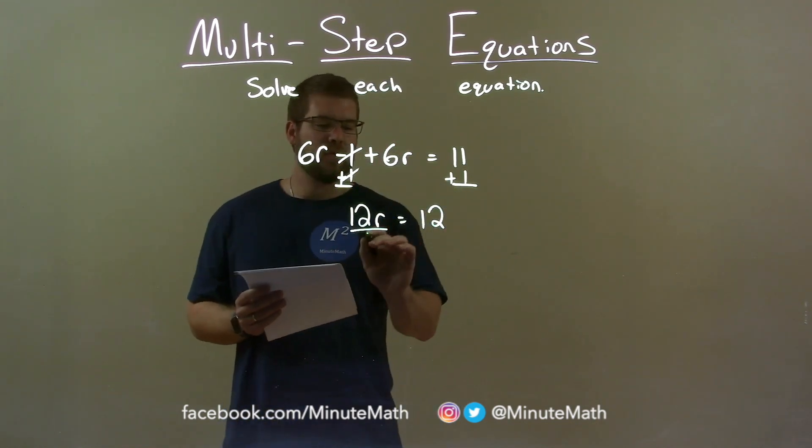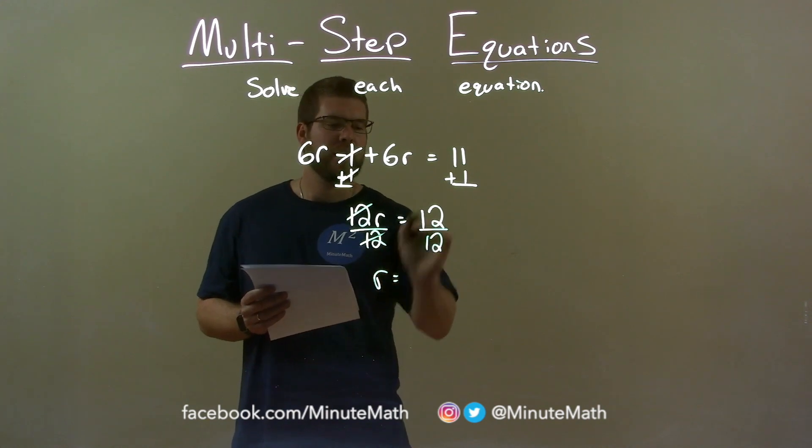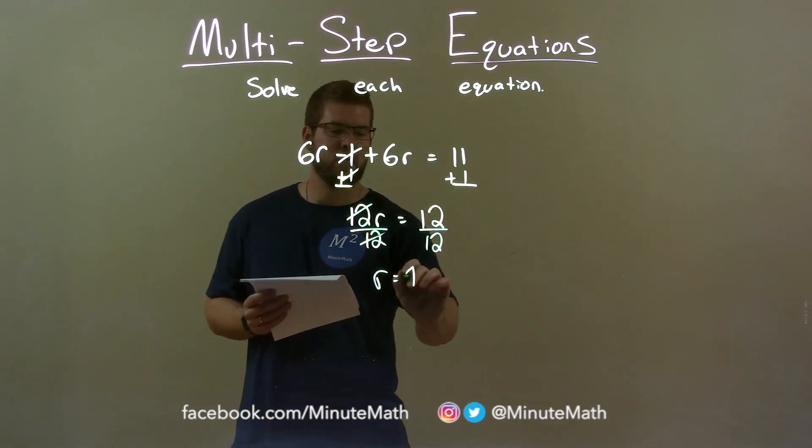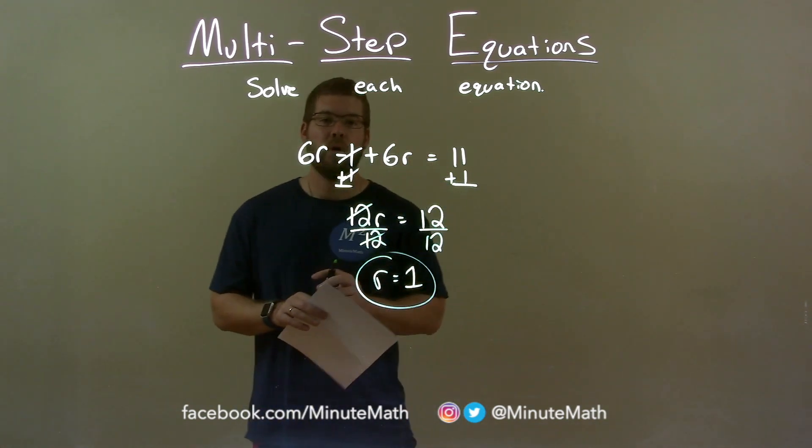Now, I divide both sides by 12, giving me r by itself, and 12 divided by 12 is 1. Remember, a number divided by itself is 1. So, our final answer is r equals 1.